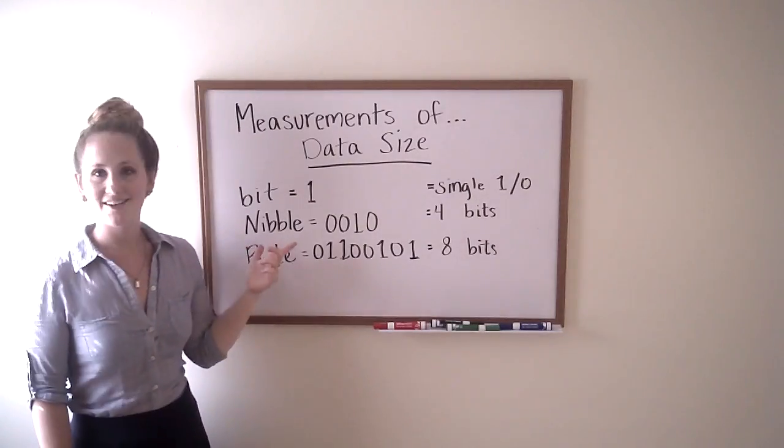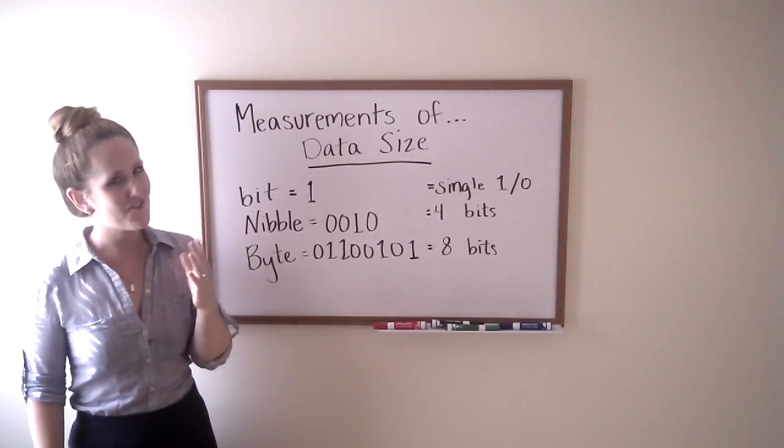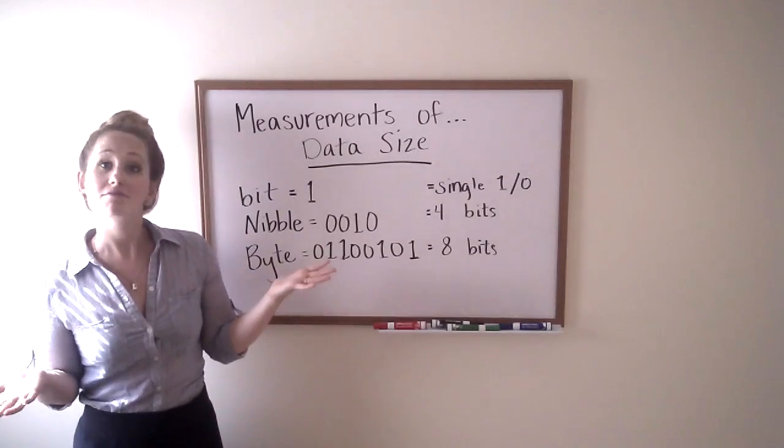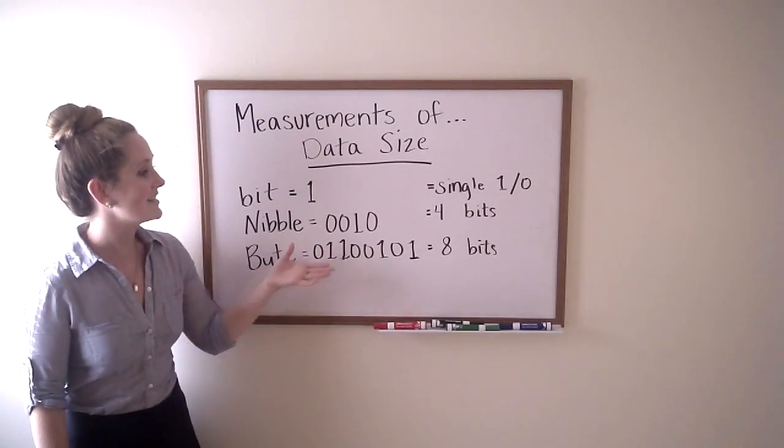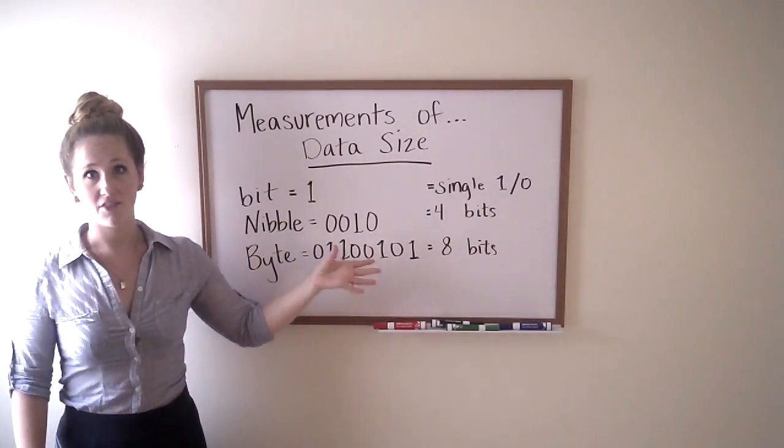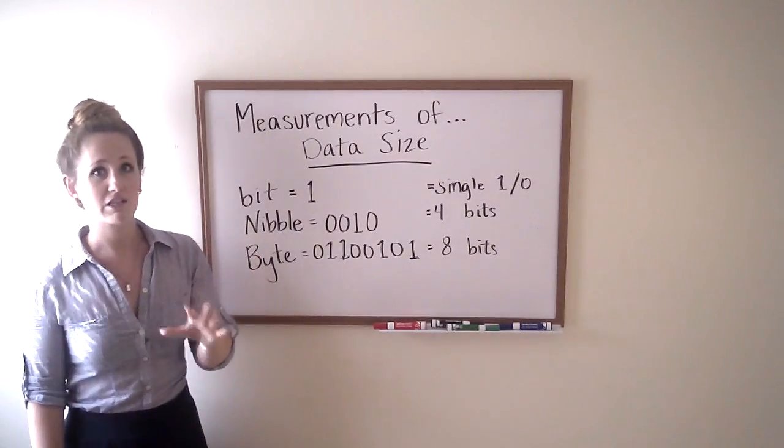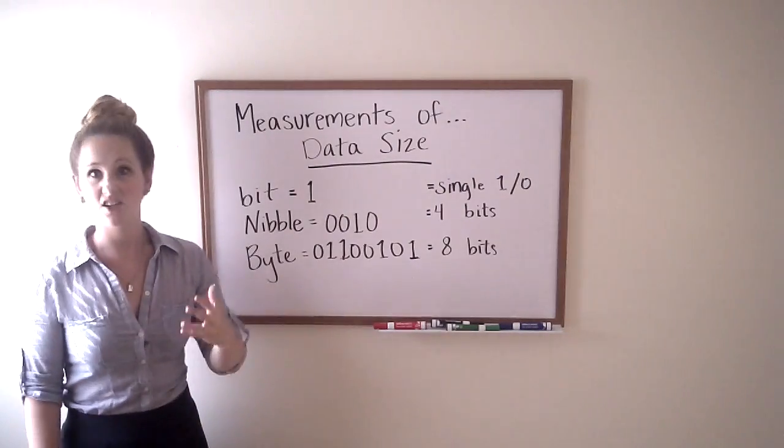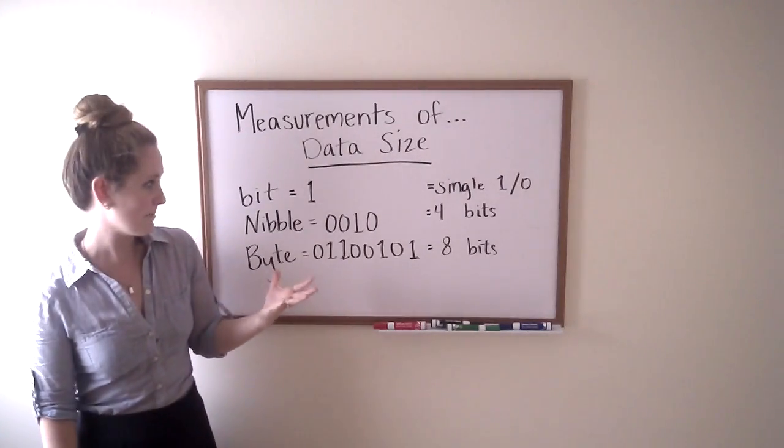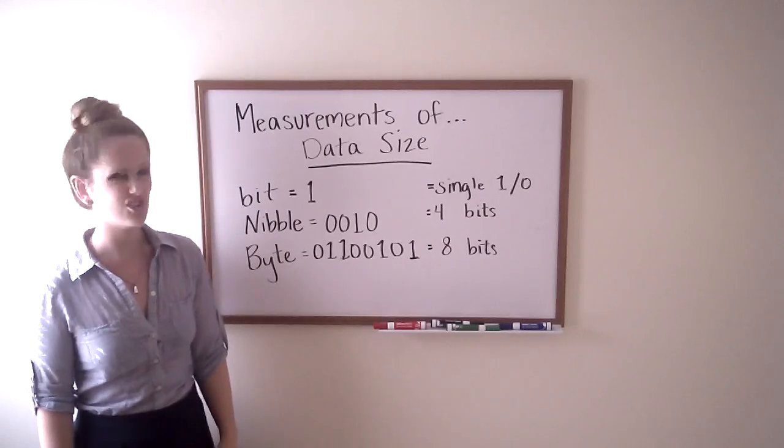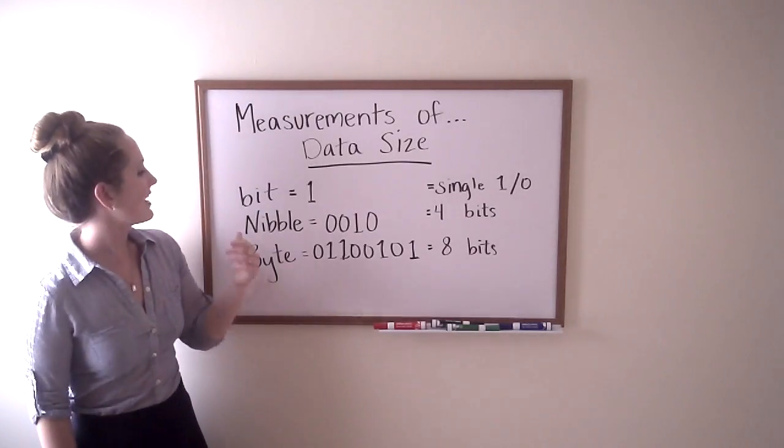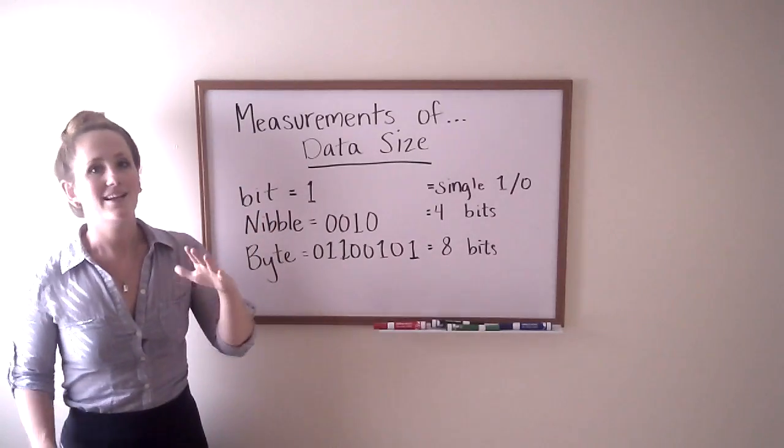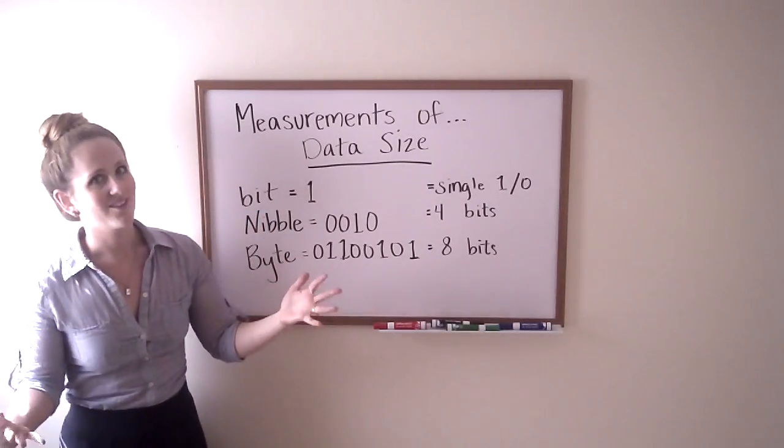Bigger than that, we've got a nibble, which is four bits. It's not very commonly used, but it's adorable. Bigger than that, we've got a byte. Now this is common, referring to something in a byte. It is eight bits put together. A lot of binary things are expressed with eight bits, like letters and symbols, and most numbers can be expressed that way until you get to really big ones. So our most basic data sizes are bit and byte, but as you can guess, it gets much bigger than that.